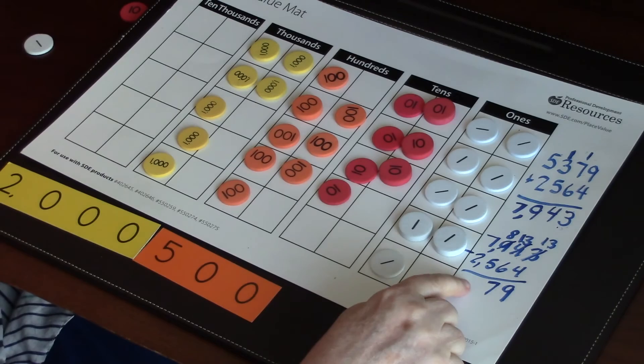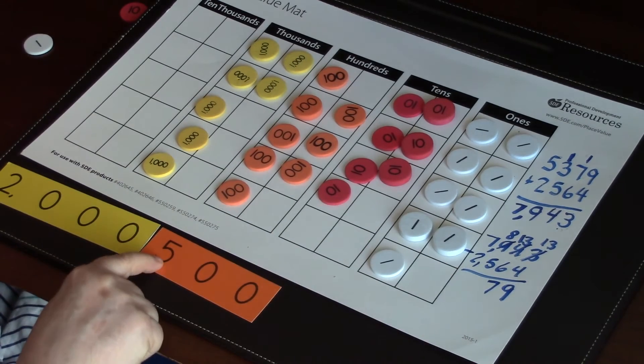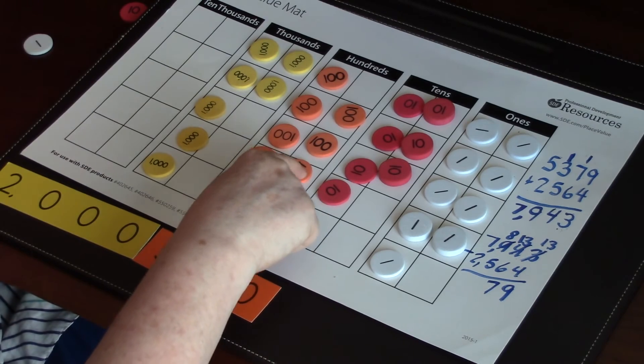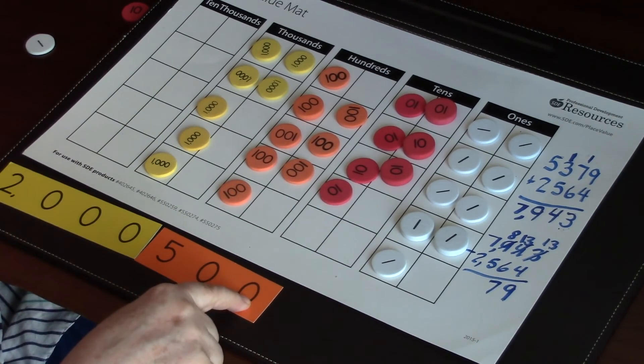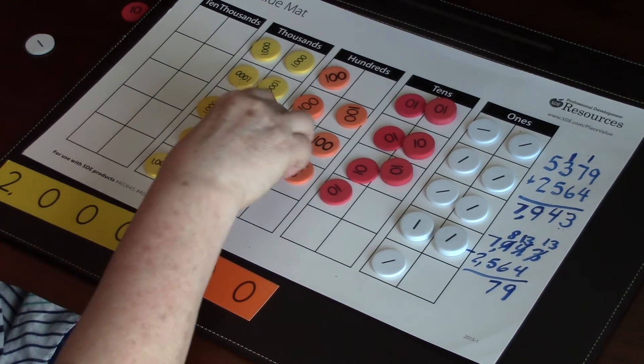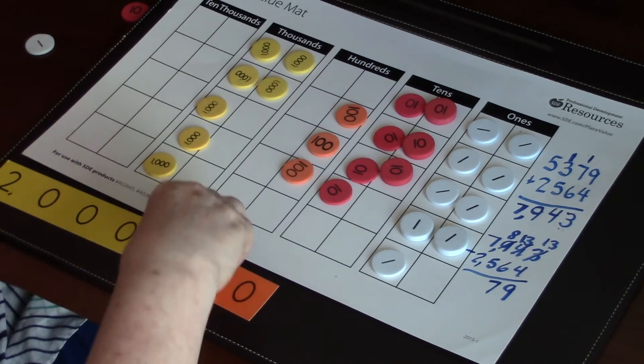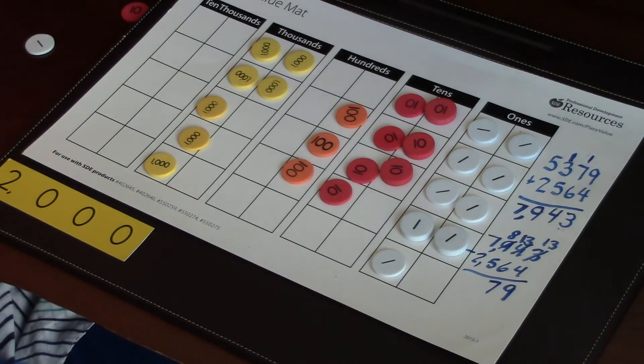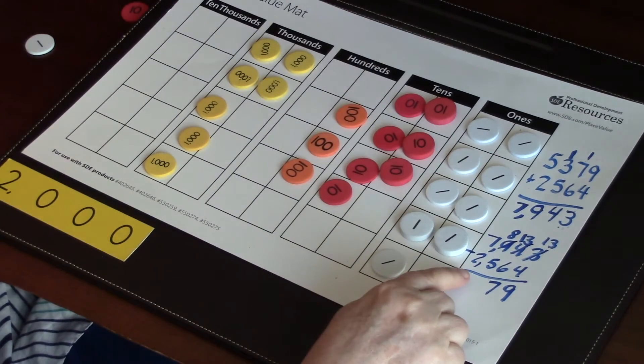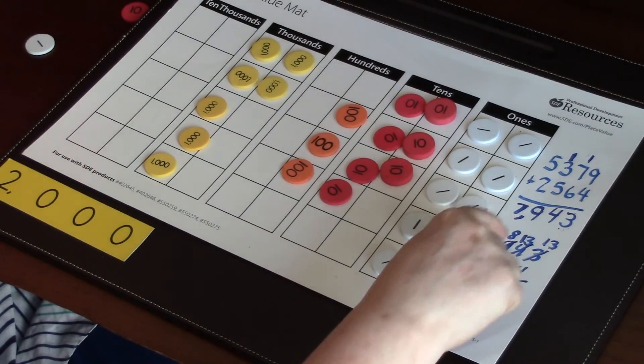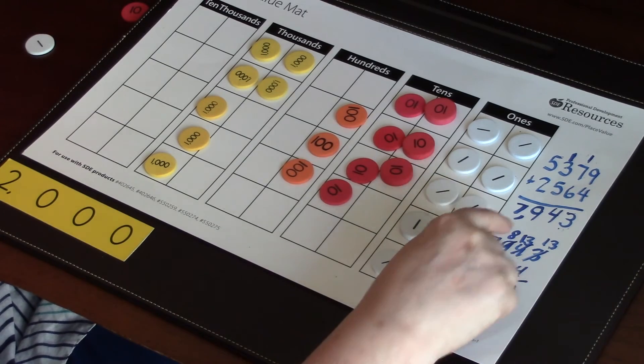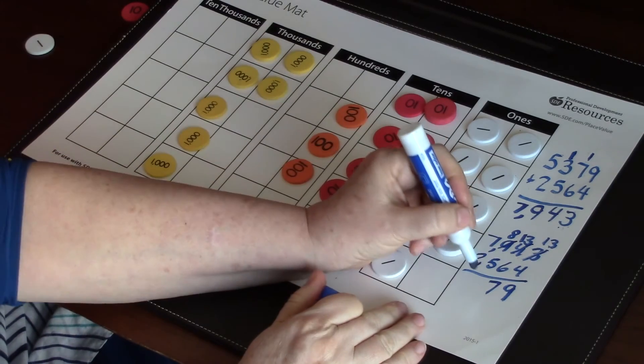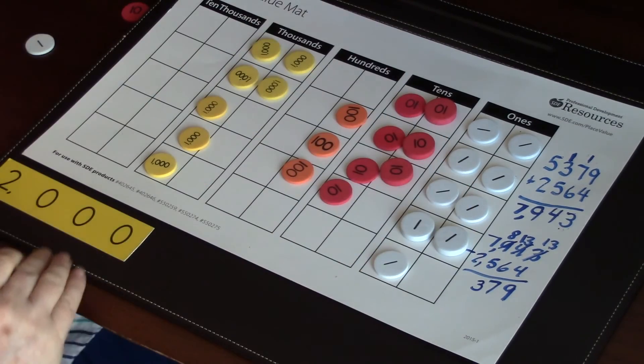So now in our hundreds place, how many hundreds do we currently have in our hundreds place? Oh, I have eight hundreds. And how many do we need to take away? Five. Can we take five hundreds away? Yes. So we're going to stack those on top of that value, five hundred, and pull that away. Do we need to change anything with our recording up here? No, because I had eight, and I had to take away five hundreds, and that left me with three hundreds.